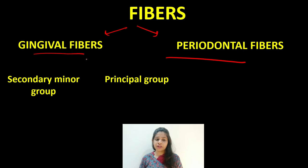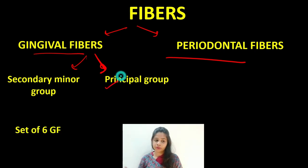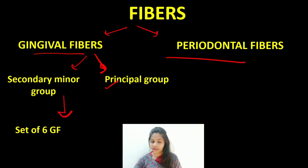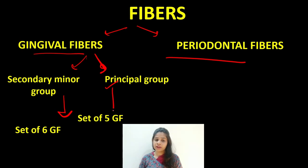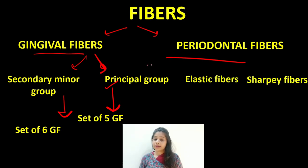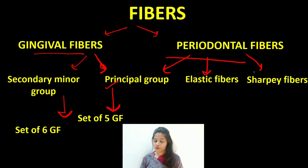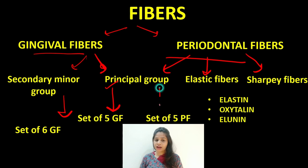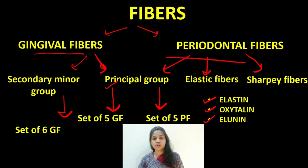Gingival fibers are further classified into two groups: the secondary or minor fibers, and the principal or major fibers. The secondary fibers are a set of six gingival fibers, and the principal fibers are a set of five gingival fibers. Periodontal ligament fibers are of three types: the principal group, the elastic group, and the Sharpey's group. The elastic group is further classified into elastin, oxytelin, and elaunin, and the principal periodontal fibers are a set of five.